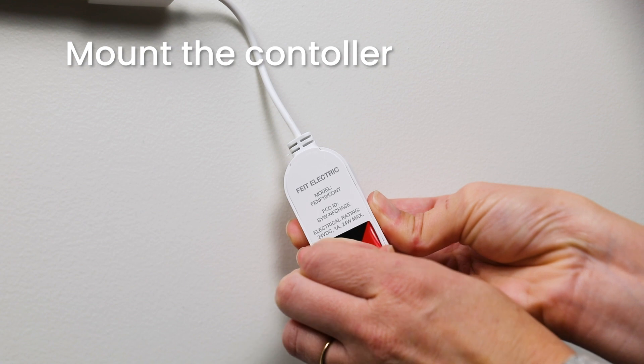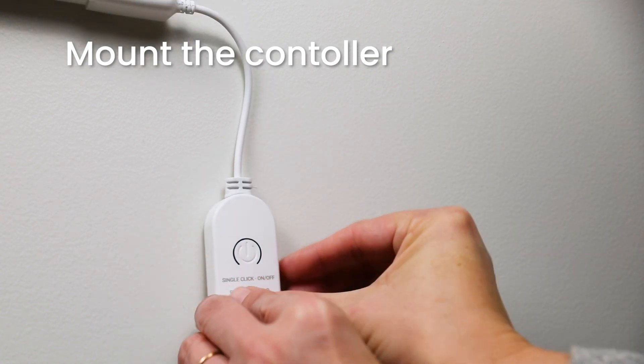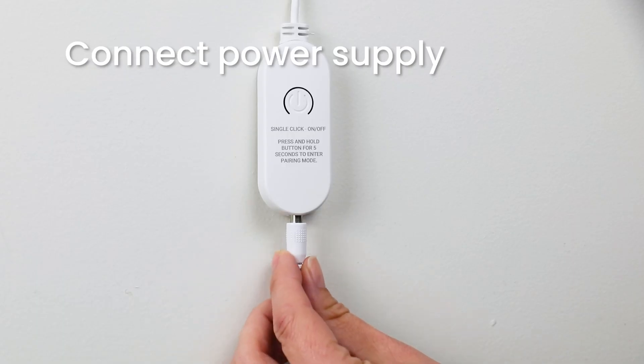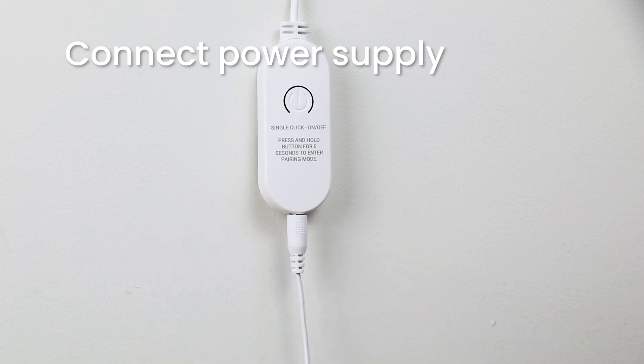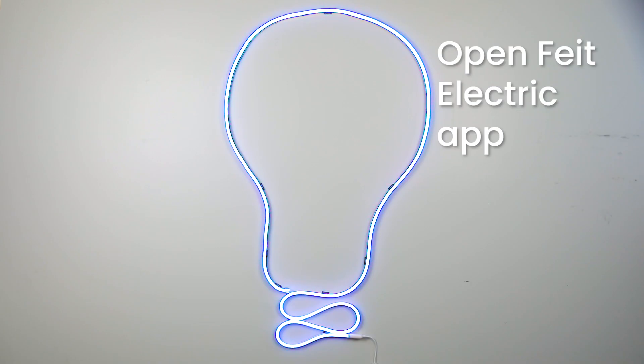Mount the controller for added stability and connect the power adapter. The NeonFlex will turn on, then begin to blink to indicate the light is in pairing mode.